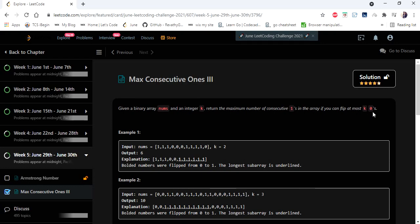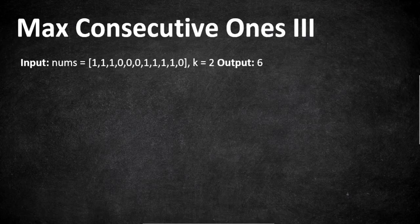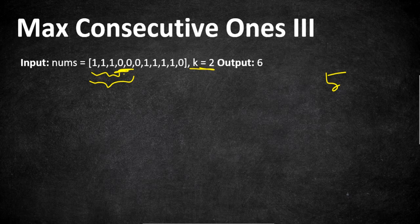Let's understand this problem with an example. We have to find the longest consecutive 1s by flipping 2 zeros at max. Considering the first 3 ones along with 2 zeros, if we flip these 2 zeros we get 5 consecutive ones. There's another set of 4 ones — flipping one zero before and after gives us a length of 6, which is the longest, and that is our output.